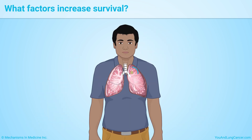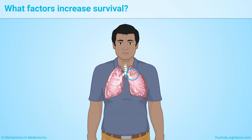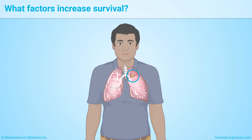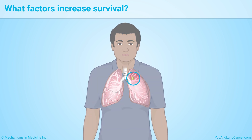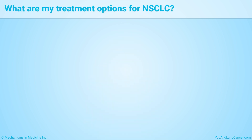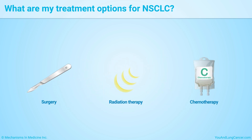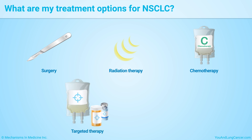Having a small cancer that hasn't spread outside the lung increases survival. The five basic ways to treat people with Non-Small Cell Lung Cancer are Surgery, Radiation Therapy, Chemotherapy, Targeted Therapy, and Immunotherapy.